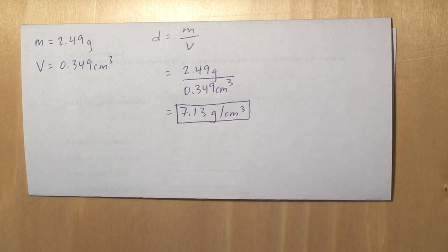So we need to remember the density formula: density equals mass divided by volume. And then we just plug those numbers into the formula: 2.49 grams divided by 0.349 cubic centimeters. And then when we calculate that out, we get 7.13 grams per cubic centimeter.